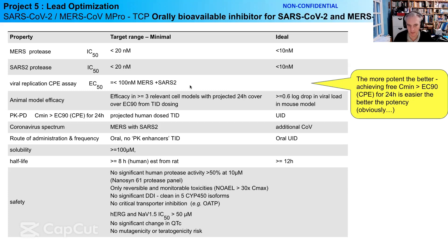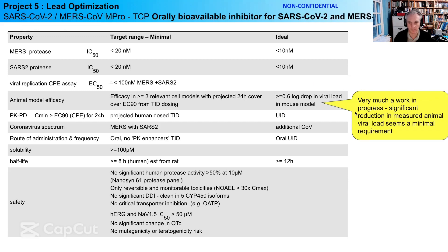Obviously the more potent an enzyme and cellular inhibitor, the better. Because our PKPD model is free minimum concentration over EC90, the more potent your compounds are, the easier this is to achieve given we won't have much dynamic range on actual pharmacokinetics. This is a work in progress. We would like to see significant reduction in measured animal viral load as a bare minimum. What constitutes an acceptable outcome in an animal model is a really interesting subject for all of us working in antiviral drug discovery projects.